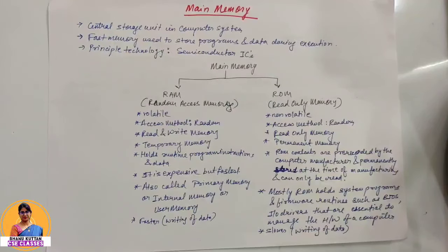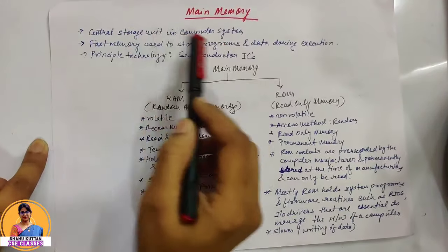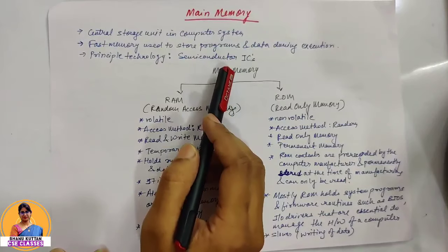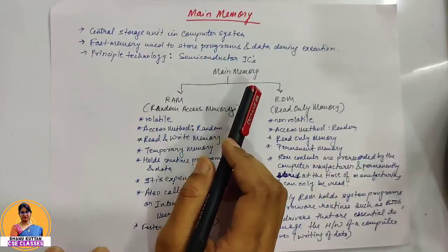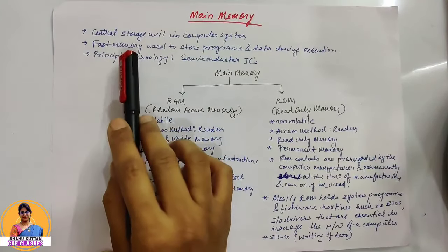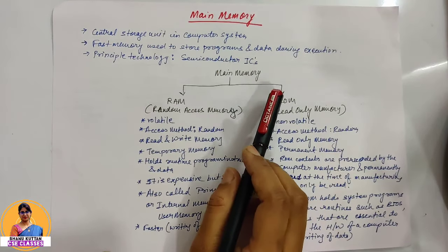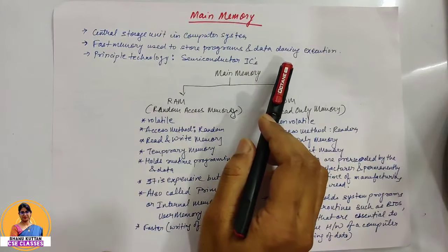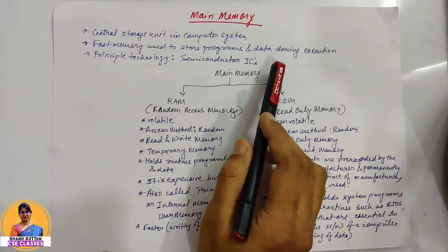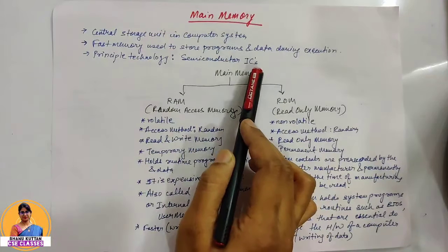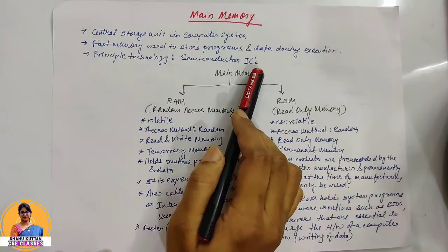Main memory — we all know that we call it primary memory. Basically, this is a central storage of the computer system. We store data which is currently under execution. It is a fast memory used to store programs and data during execution. The principal technology used in main memory is semiconductor integrated chips, that is semiconductor ICs.